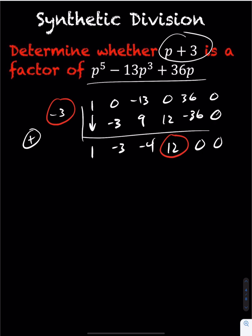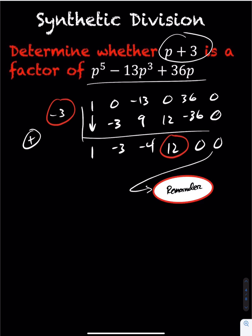And lastly the last spot here will also be a 0. A remainder of 0 means that p plus 3 is a factor.